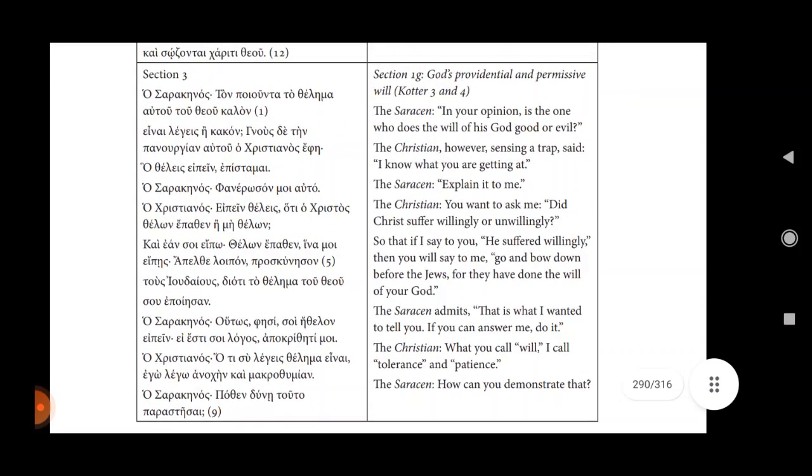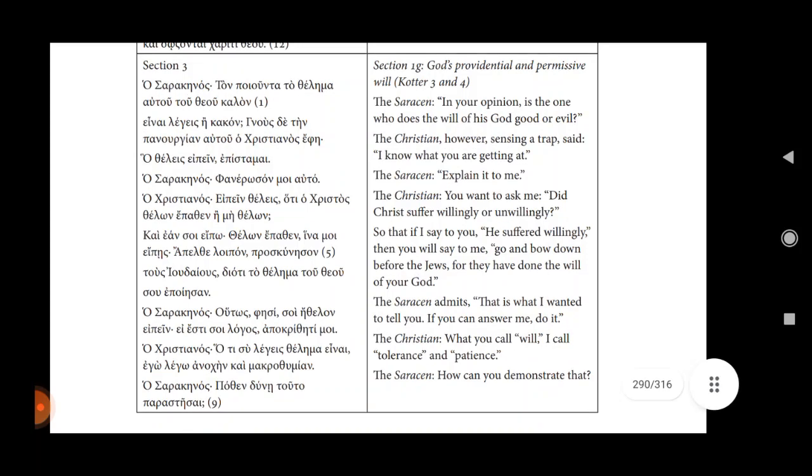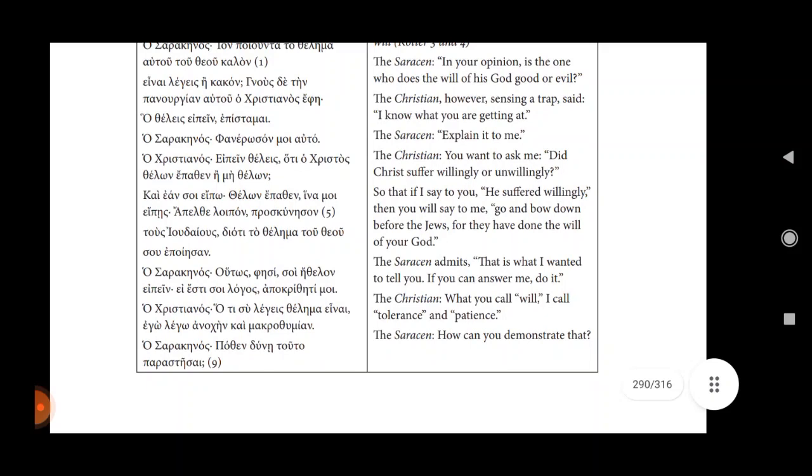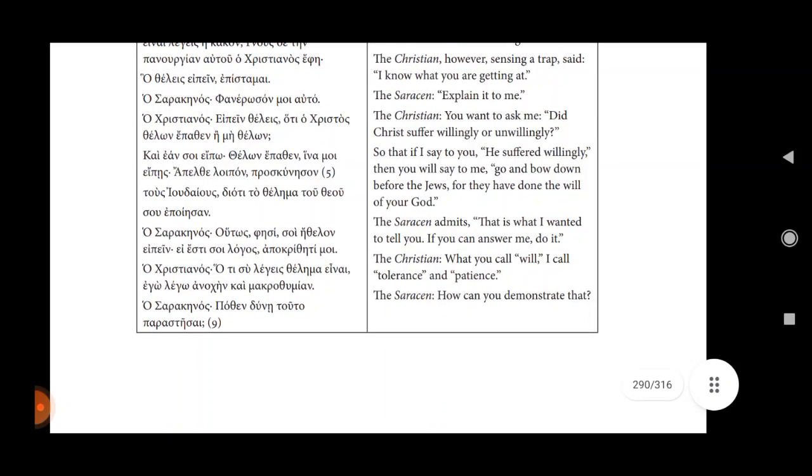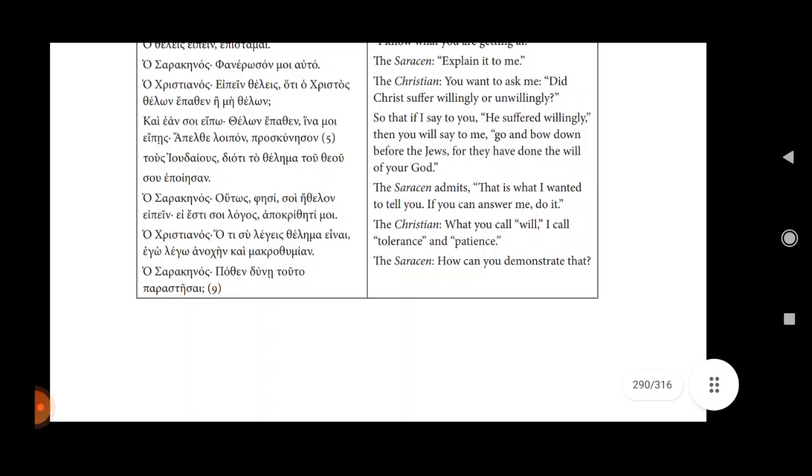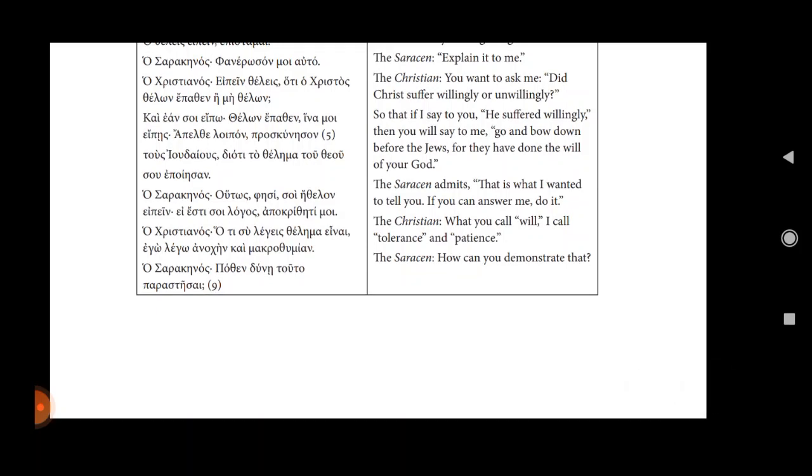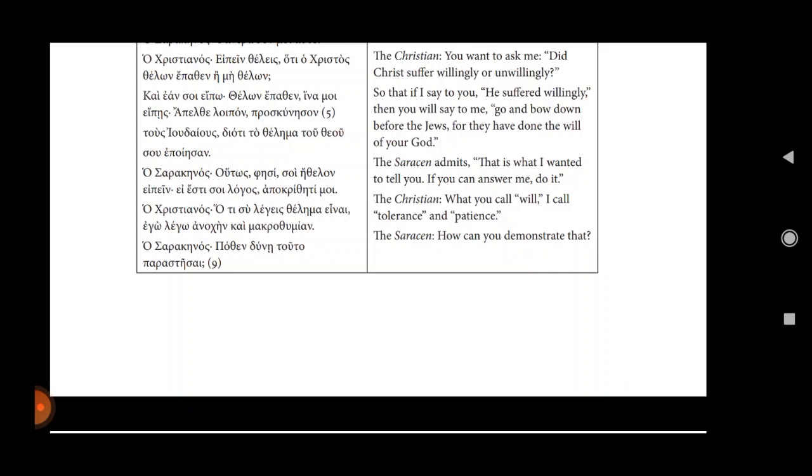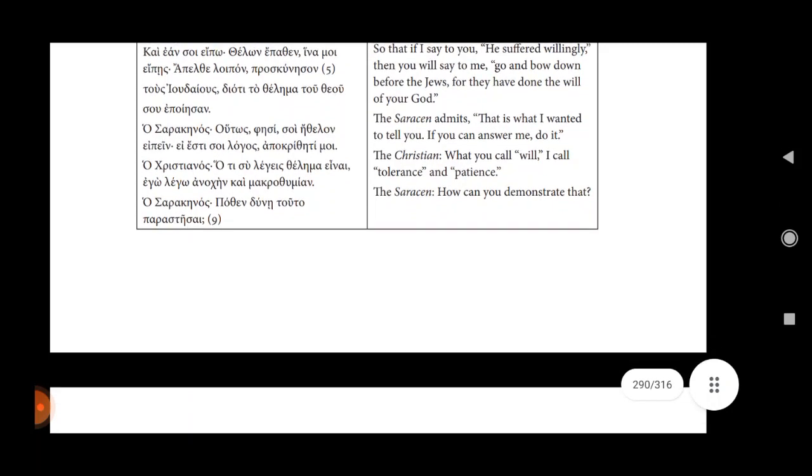Section 1g, God's providential and permissive will. Quotar three and four. The Saracen: In your opinion, is the one who does the will of his God good or evil? The Christian, however, sensing a trap said: I know what you are getting at. The Saracen explained: You want to ask me, did Christ suffer willingly or unwillingly? So that if I say to you he suffered willingly, then you will say to me, Go and bow down before the Jews, for they had done the will of your God. The Saracen: That is what I wanted to tell you. If you can answer me, do it. The Christian: What you call will, I call tolerance and patience.